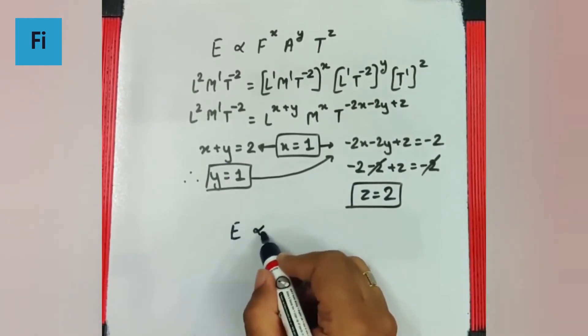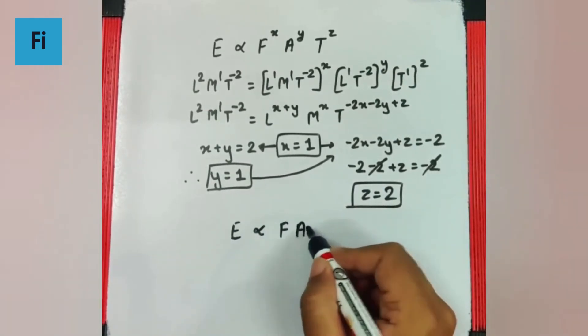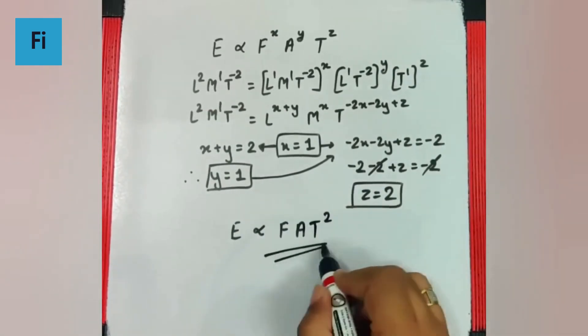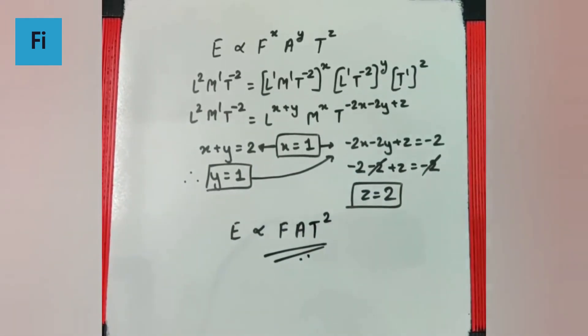Yani energy proportional to F raised to 1, A raised to 1, T raised to 2 ho jayega. And yeh hoga hamara final answer.